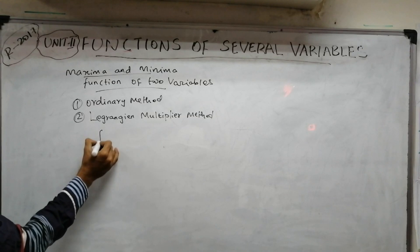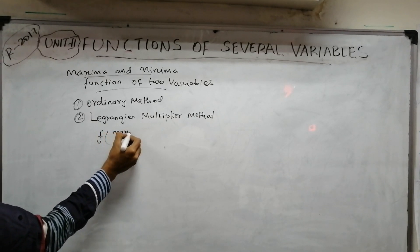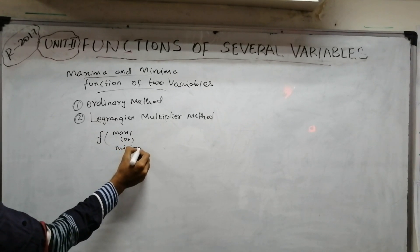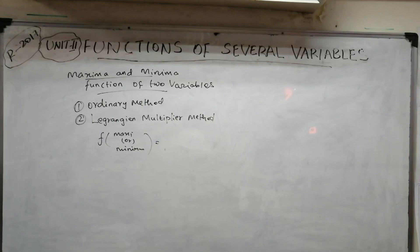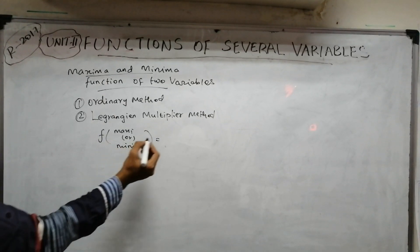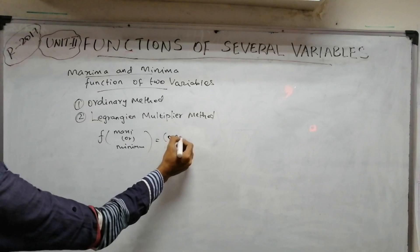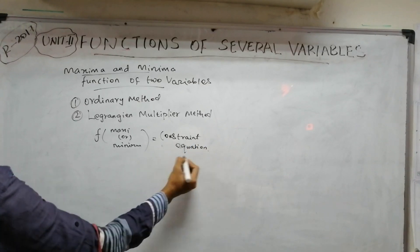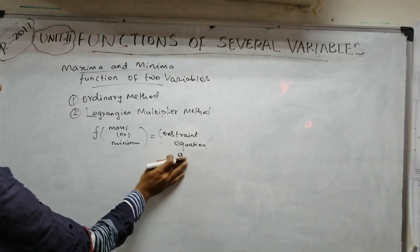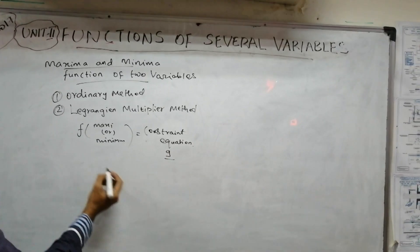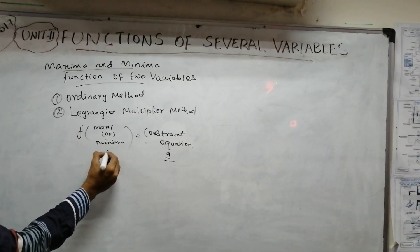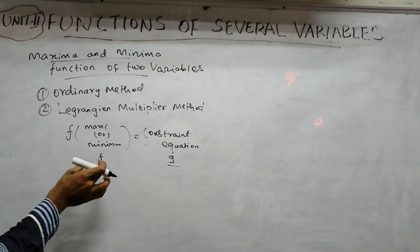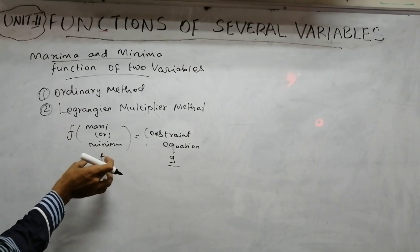In the Lagrange Multiplier method, we have one function f(x,y,z) whose maximum or minimum we want to find. This function is subject to a constant equation, also called the constraint equation.